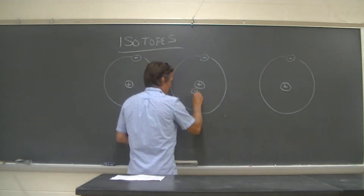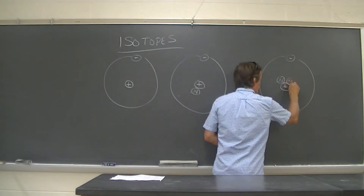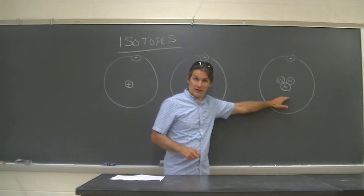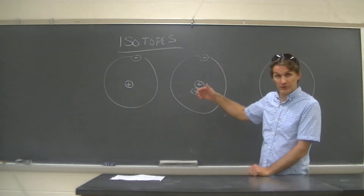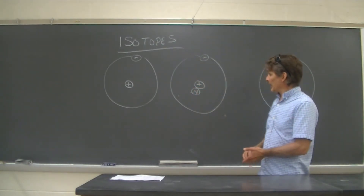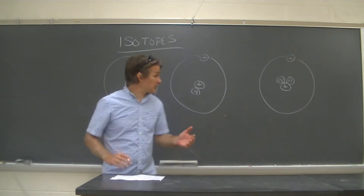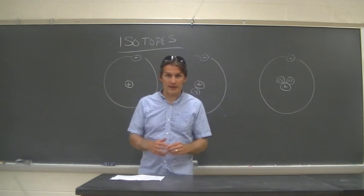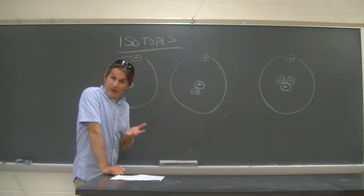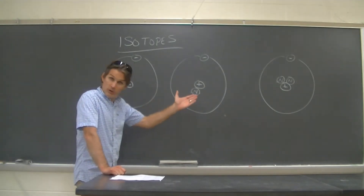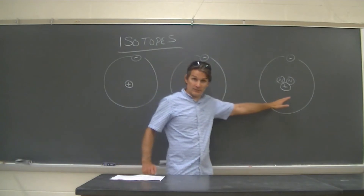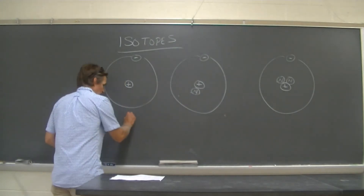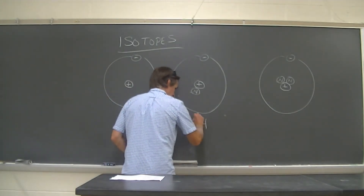There happen to be three types of hydrogen. The first has zero neutrons, the second has one neutron, and the third has two neutrons in the nucleus. These are the three isotopes. We have to call all three hydrogen, but they are different from one another — this one is three times as heavy as the first, and this one is two times as heavy.